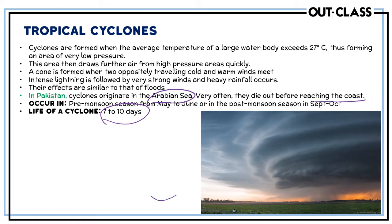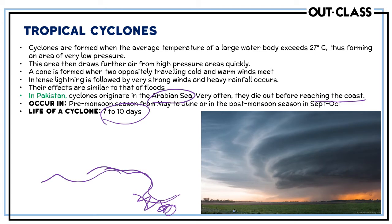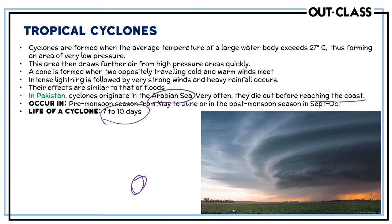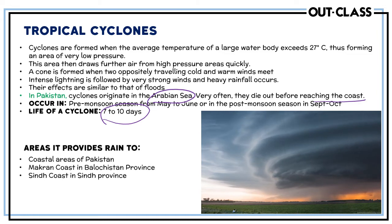Cyclones from the Arabian Sea often die out before even reaching the coast. The rainfall they provide is only to the Makran coast region and the Sindh coast — the coastal regions. It does not reach the highlands, lowlands, or arid regions. Tropical cyclones are only attributed to the tropical coastal region of Pakistan.